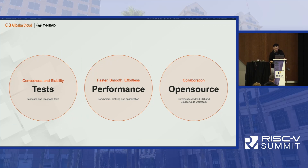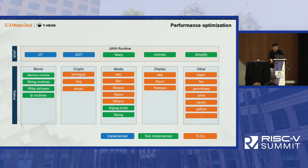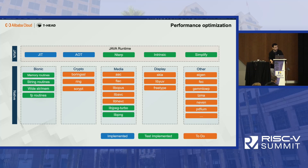Performance optimization is another big chunk of work. We focus on three different things. One is Bionic — this is a basic library we use every day, for example, memory copies, string copies, and routines. Another is Java runtime — that's a big chunk of things we are optimizing. In addition to those two, we also did a lot of optimization on image encoding and decoding, using vector extension optimization techniques, and those can be reused in the future easily.